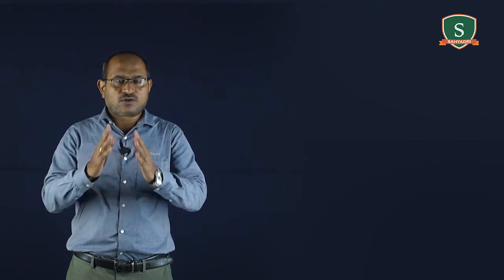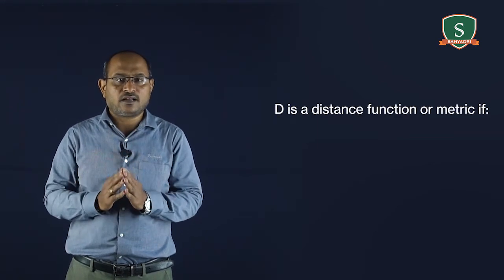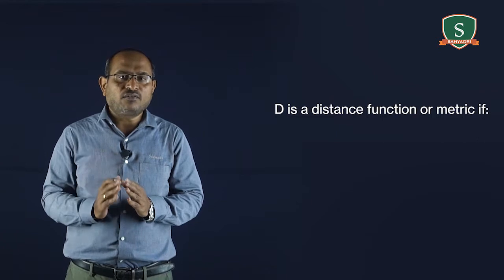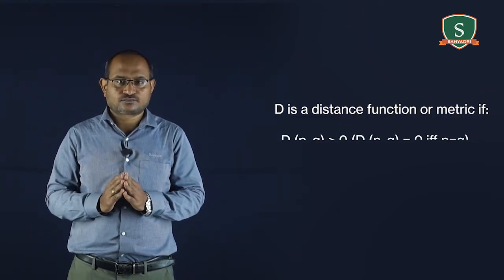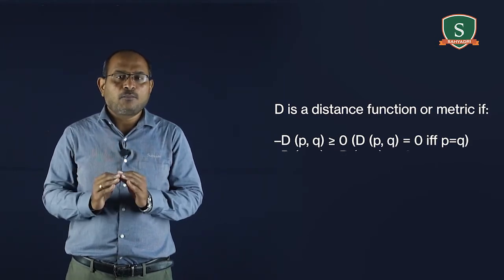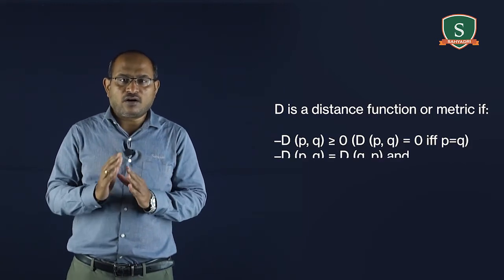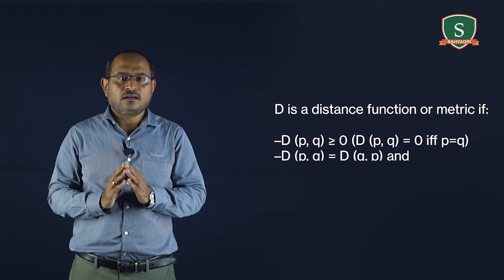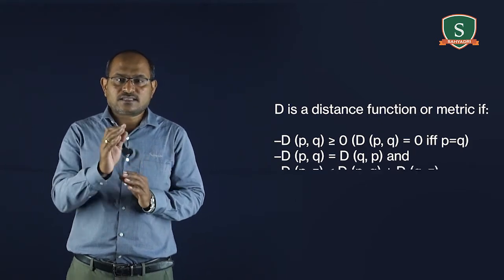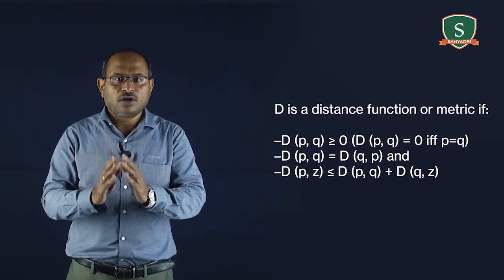For pixel p, q and z with coordinates x, y; s, t; u, v — d is the distance function or a matrix if d of p, q is greater than or equal to 0; d of p, q equals 0 if p equals q; d of p, q equals d of q, p; and d of p, z is less than or equal to d of p, q plus d of q, z.